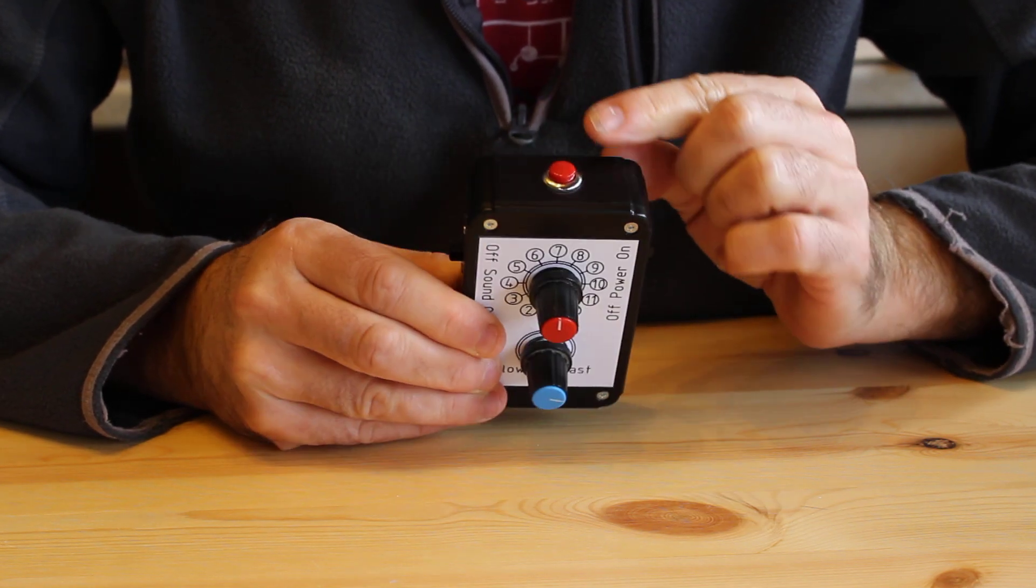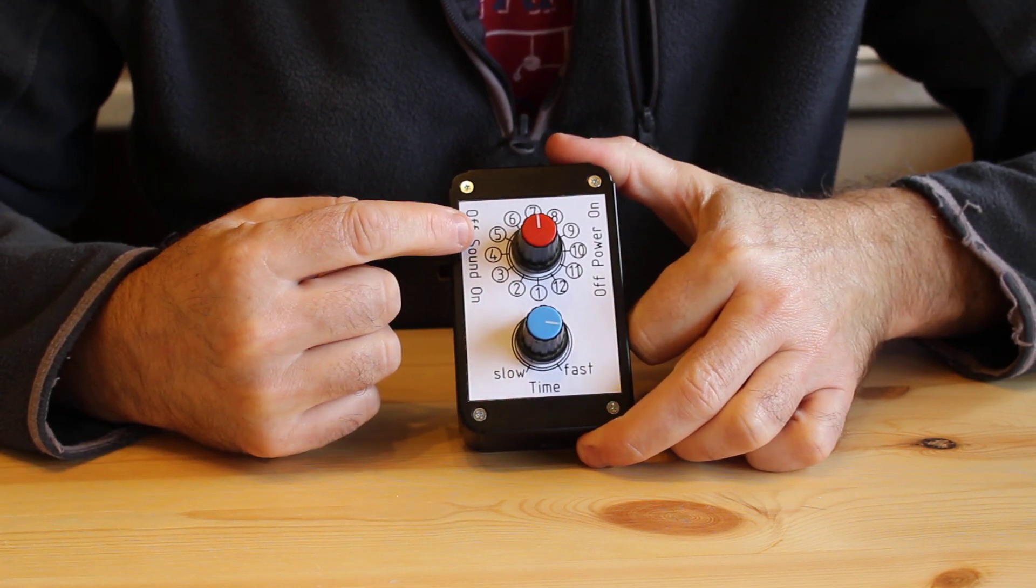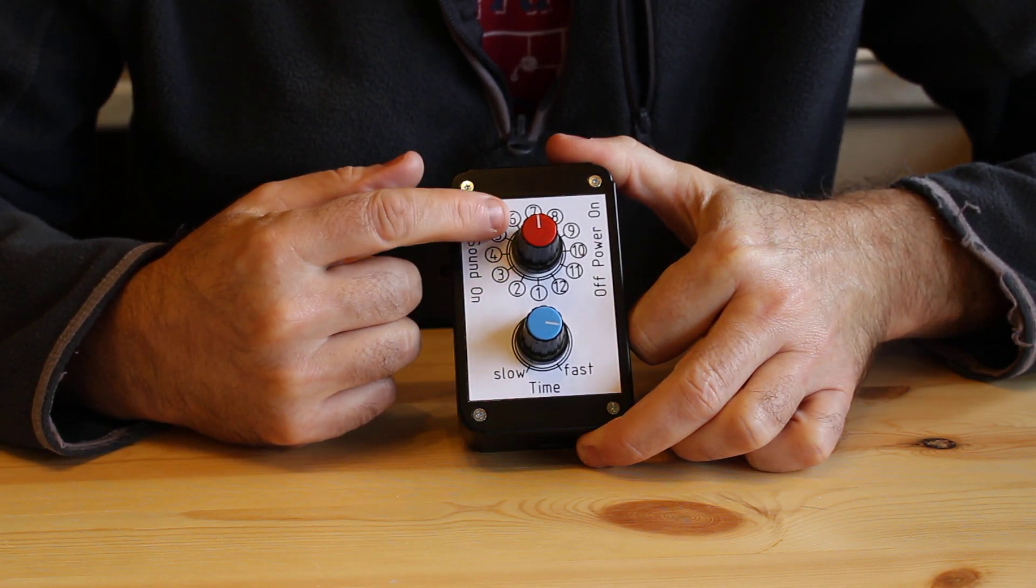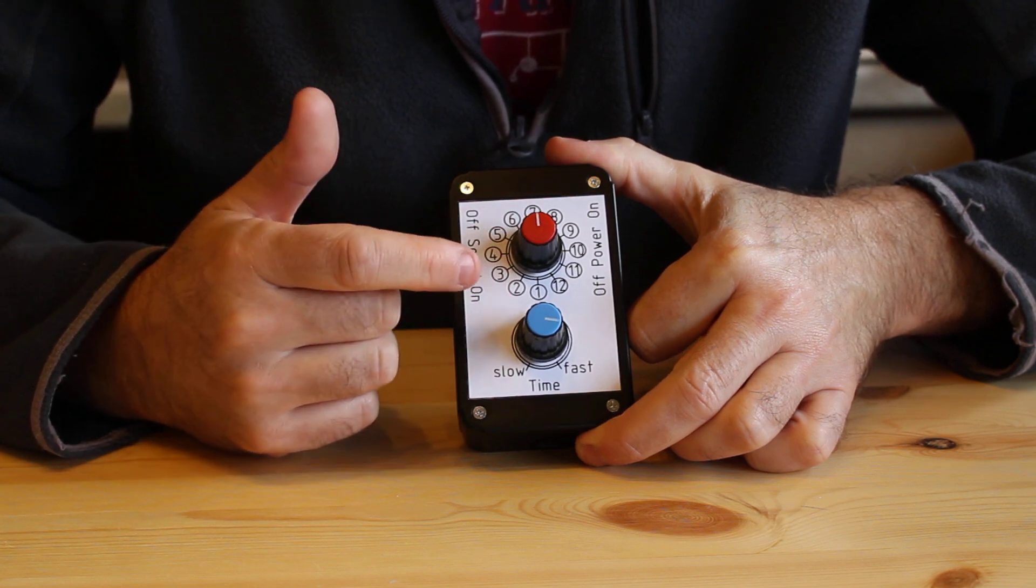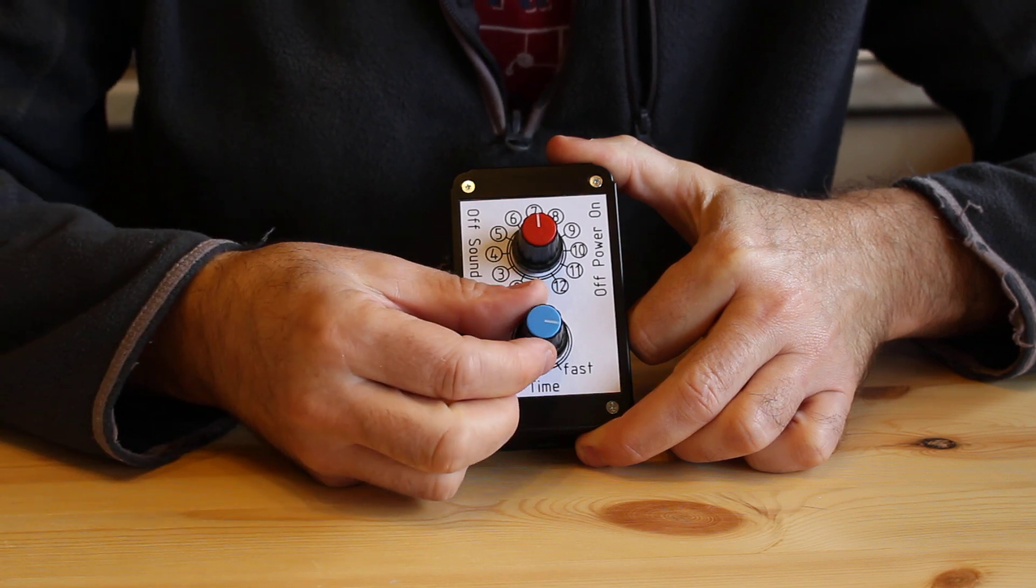The red button on top starts the sequence going, and here you've got 12 positions which select different three-letter words. Position one and position two demonstrate dots and dashes, and then you've got a speed adjustment here.